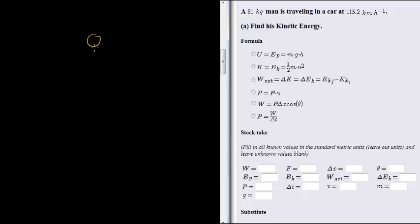Let's draw that man traveling in a car. We don't need to write the car because the question involves the man. There he is driving in a car, and he is traveling at 115.2 kilometers per hour. The first question simply asks to calculate his kinetic energy.